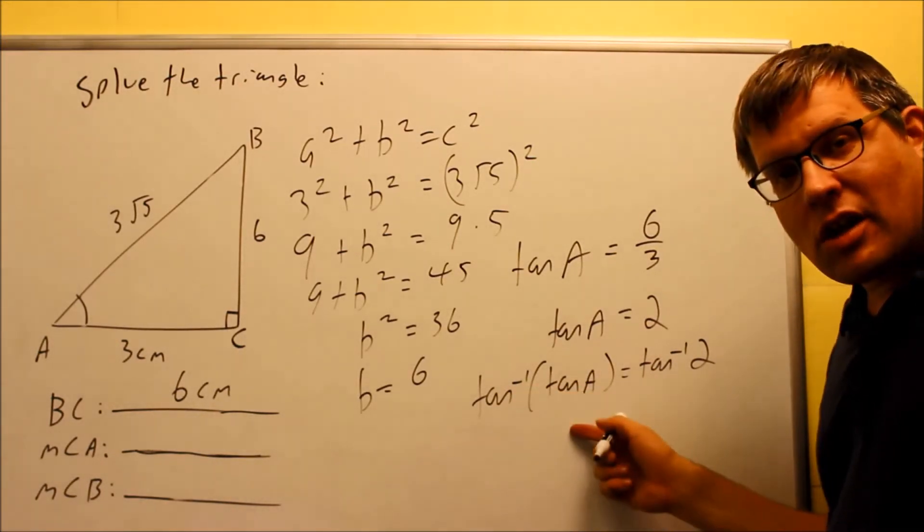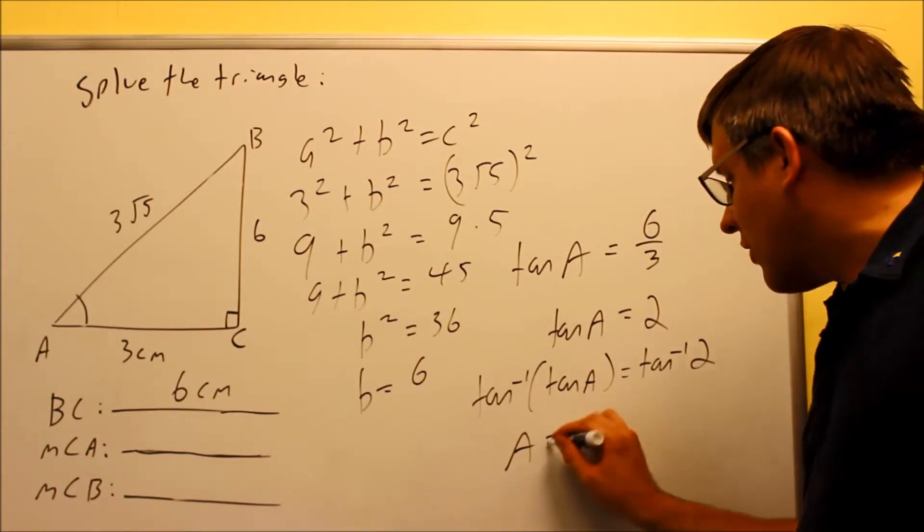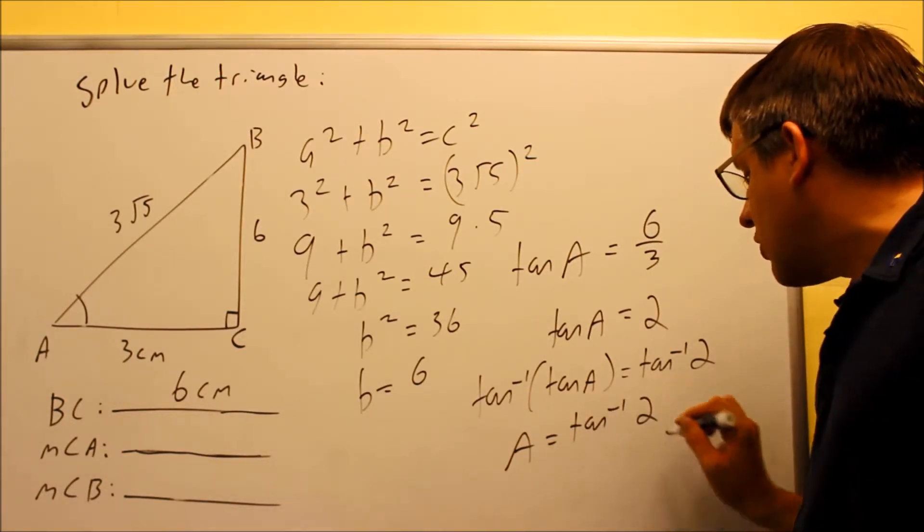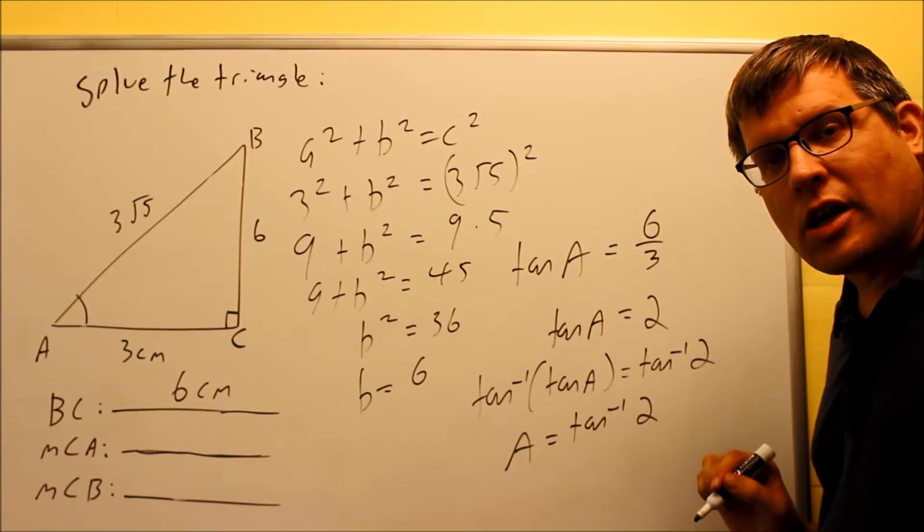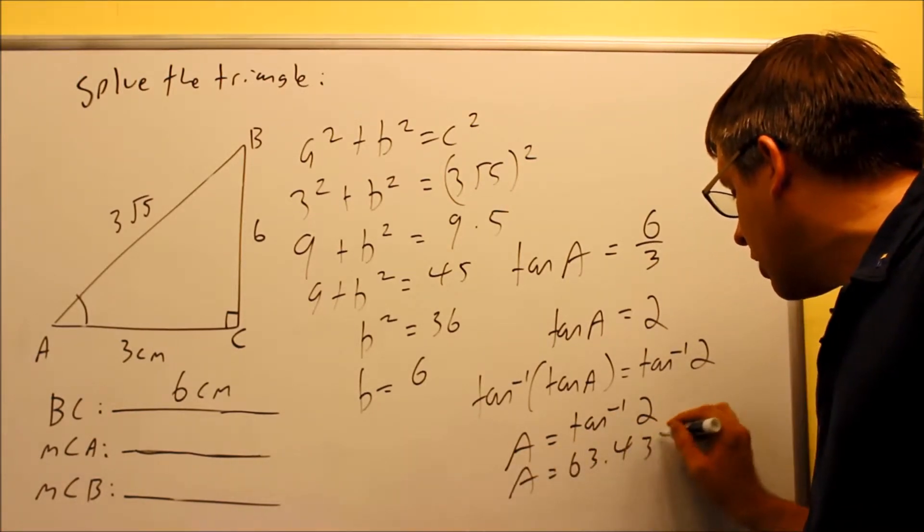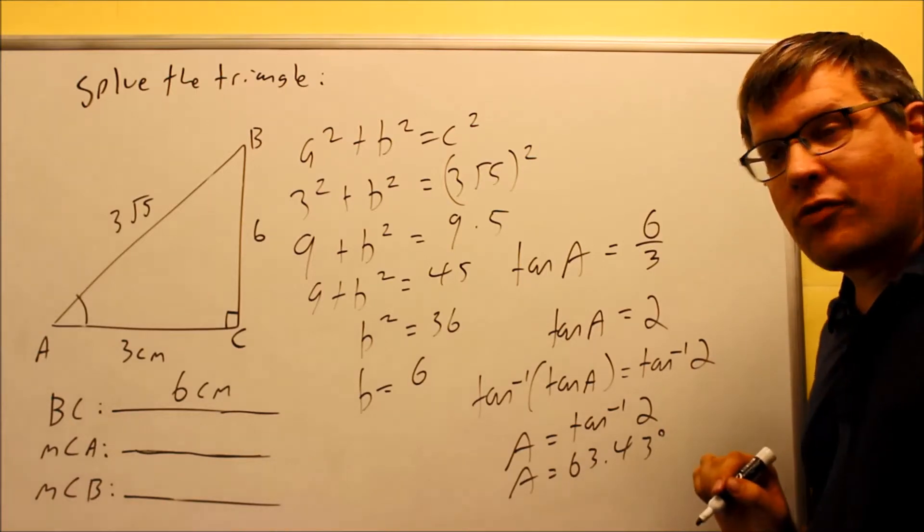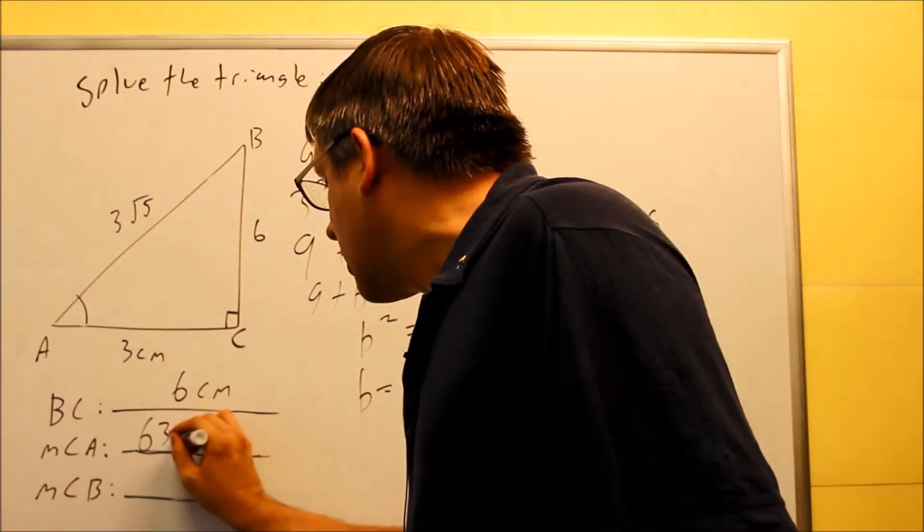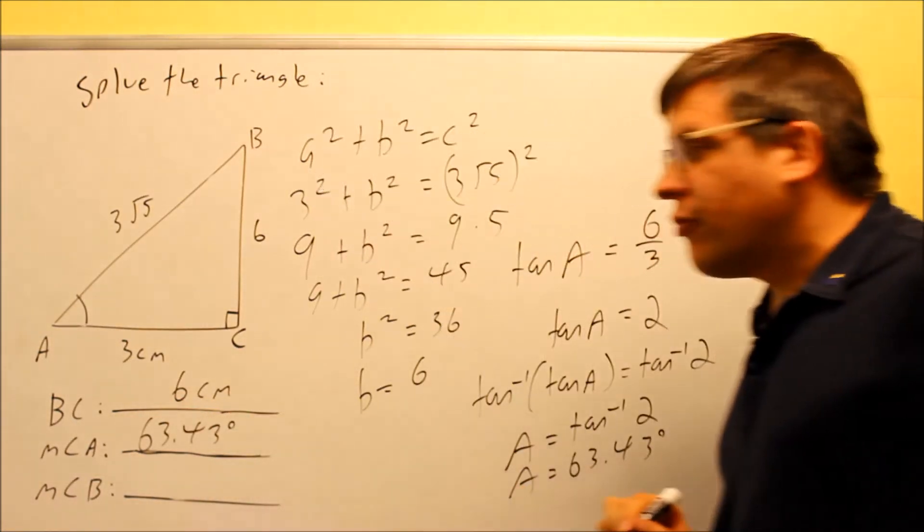Inverse tan here, and that tan, that's going to cancel, and you're just going to get A by itself. So I have A equals inverse tangent of 2, and now this is the one I want to put into my calculator. When I do, I get 63.43 degrees. That's my measurement for angle A. That's going to be this one here, 63.43 degrees.